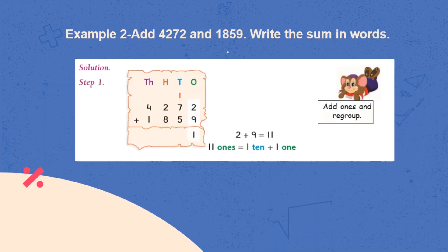Taking another example of 4 digits to clearly understand. Here, we will add 4272 with 1859. Adding 2 to 9 gives us 11 ones. 11 ones will be equal to 1 ten plus 1 one. So, we will carry 1 ten to 10's column.